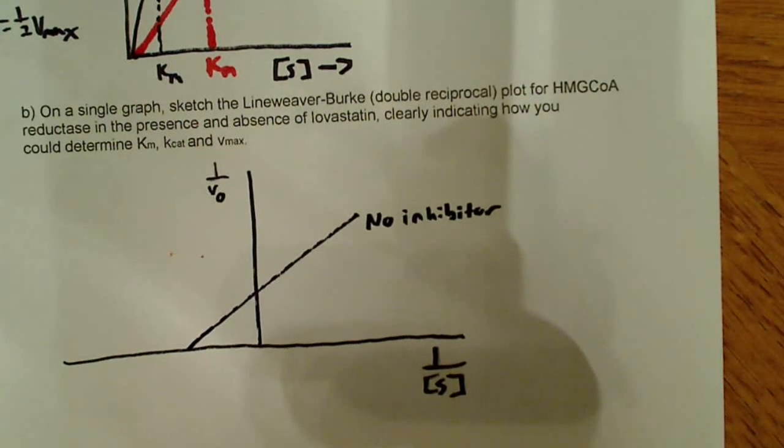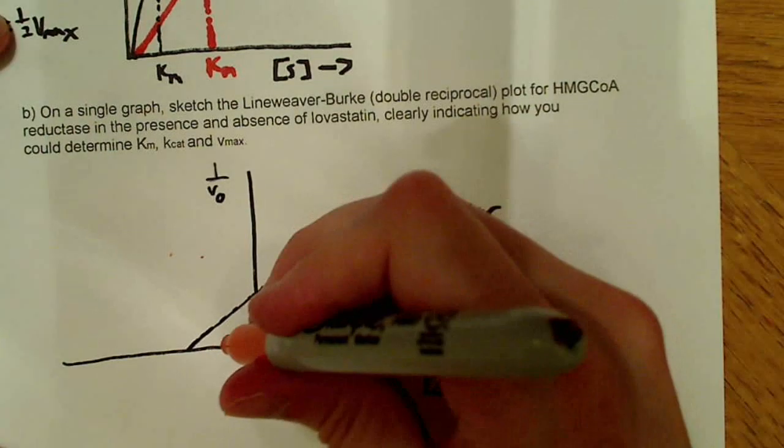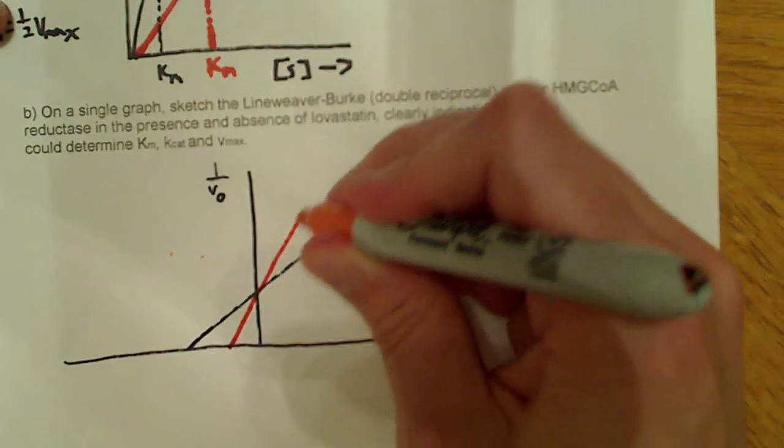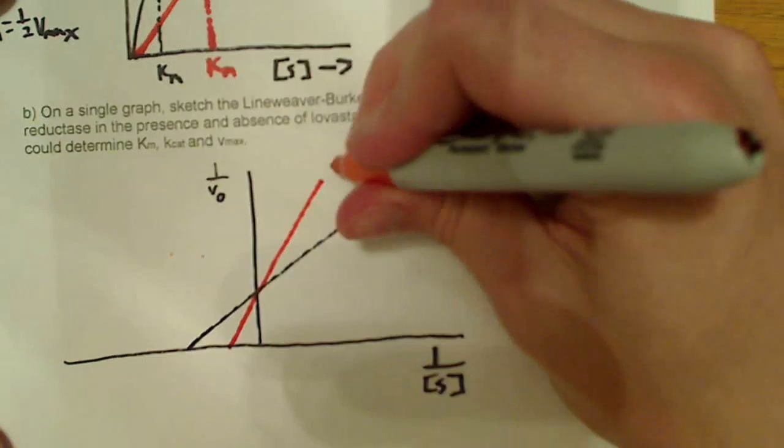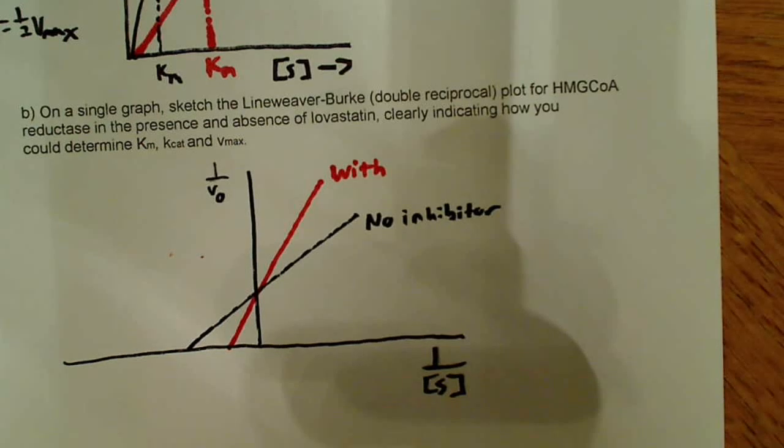The next thing I'm going to do is I'm going to draw my inhibitor. And remember, the Km is going to increase. So, we're going to have something like this, we're going to cross at the same spot, because we're going to have the same Vmax, and we're going to say that this is with. I'm just going to say with inhibitor.